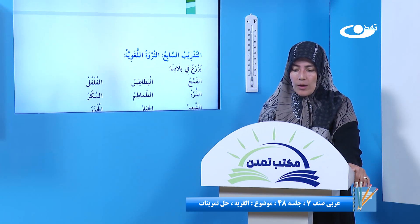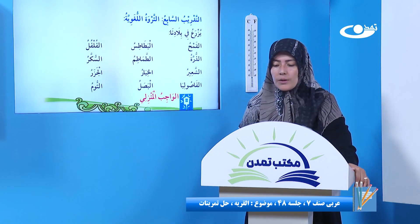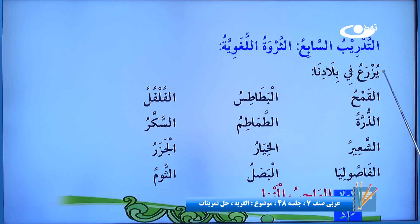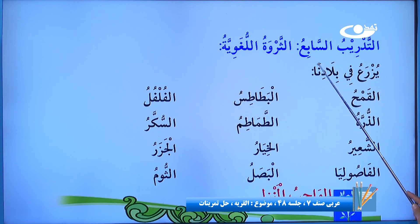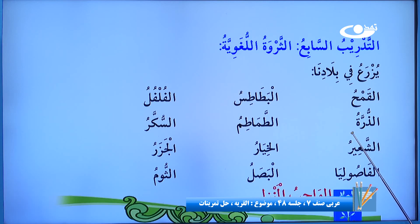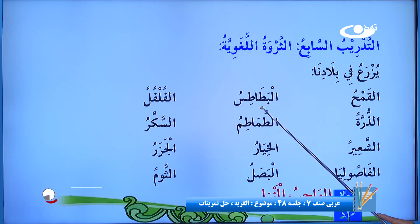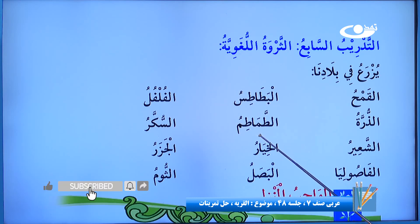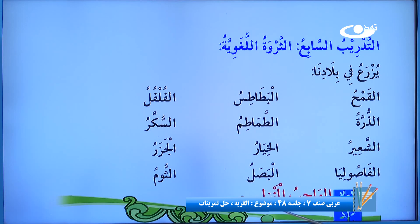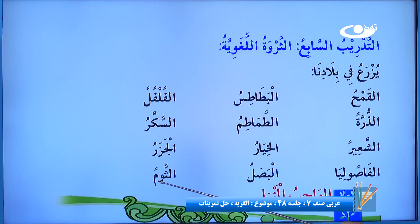تمرین بعدی از تدریب سابع، از فروت و لغبی که از ذخیره لغویه آخر کتابتان استخراج کردین. جالب است که اینها متصل شده به محصولات وطن ما: یُزرع في بلادنا - کشت میشه در سرزمین ما. قمح به معنای گندم، ذرت به معنای جواری، شعیر به معنای جو، فاصولیه، بطاطس یعنی کچالو، طماطم، رومی با بادنجان، خیار که همان بادرنگ است، بصل یعنی پیاز، فلفل که مرچ است، سکر یعنی نیشکر، جزر یعنی زردک، و ثوم به معنای سیر.